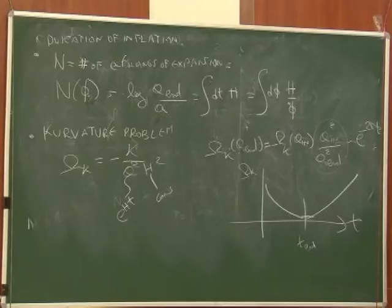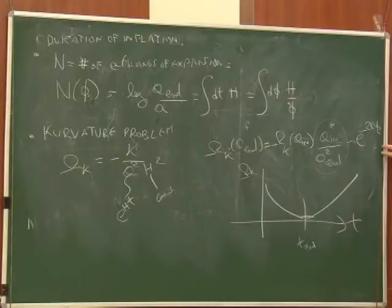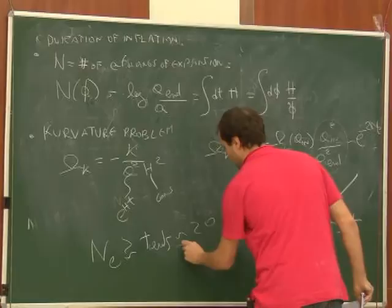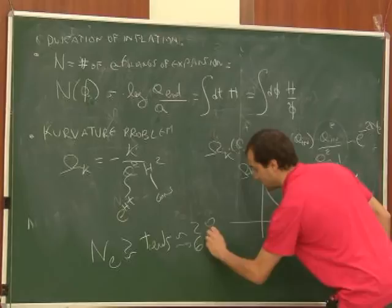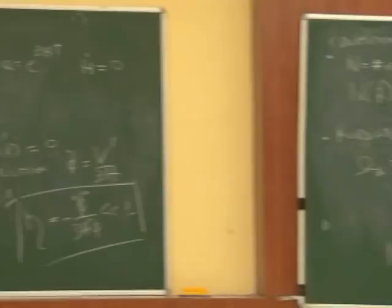We want the end-of-inflation value of Ω_κ to be small enough — for example, Ω_κ ≲ 10^{−22} at BBN or ≲ 10^{−63} at the Planck scale. This requires e^{−2N_e} to be smaller than these numbers, giving N_e ≳ tens. Typical numbers are of order 60. This same number of e-foldings also fixes the horizon problem.